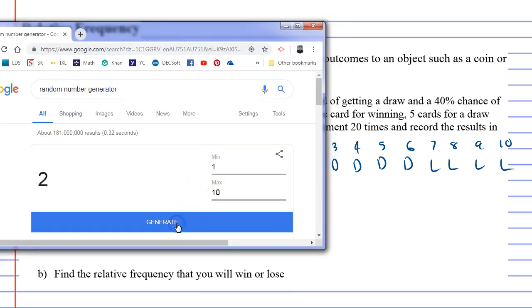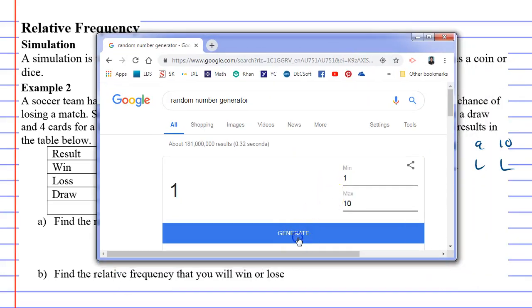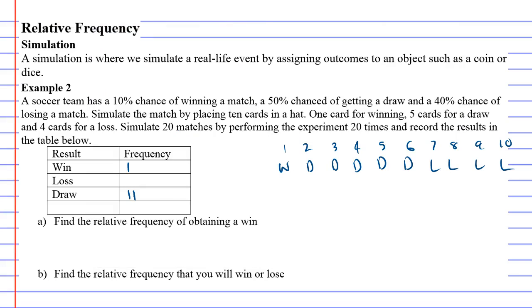2 is a draw. Okay, that's a tally mark there. We'll do one more and then we'll move on. Oh, we've had a win again! Wow, this is going really good. Alright, I'm going to pause. I'm going to finish this experiment and we'll come back.